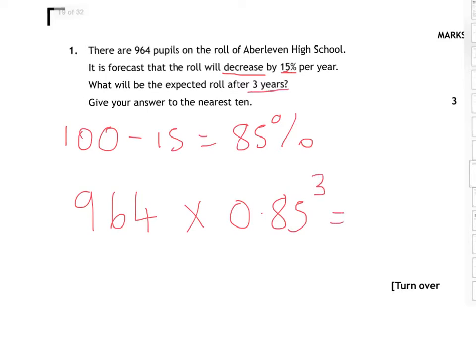Work that out on the calculator. This one tells us to round it to the nearest 10. When we work it out on the calculator, we get 592.01. So rounding to the nearest 10 — hundreds, tens, units — the tens digit is 9, and looking after the 9 there's a 2. Since 2 is not 5 or more, the 9 stays the same. So the nearest 10 to 592.01 is 590.